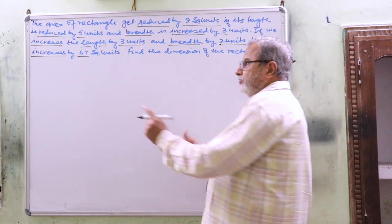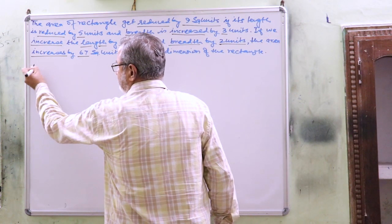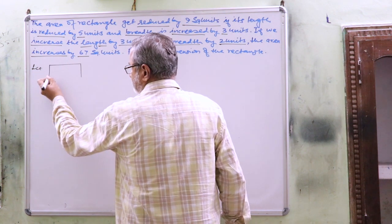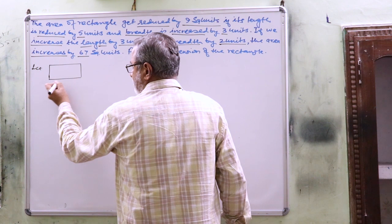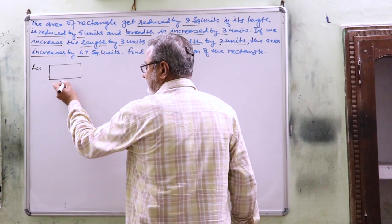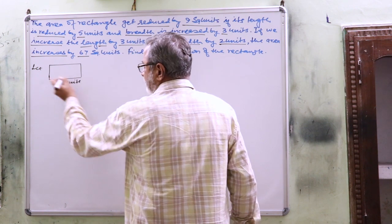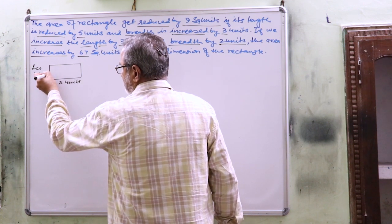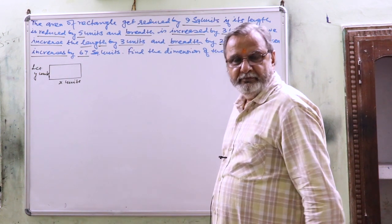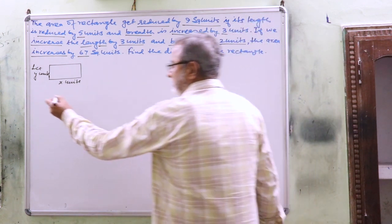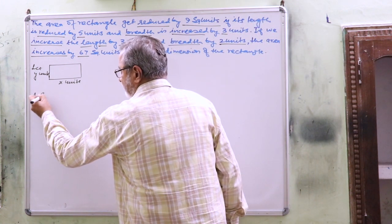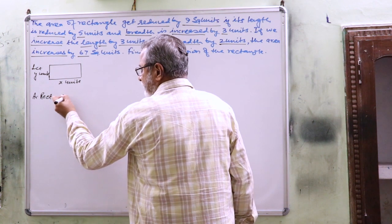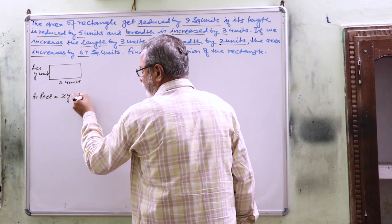So let x be its length and y its breadth. Hence, area of the rectangle, that is length into breadth, is xy square units.